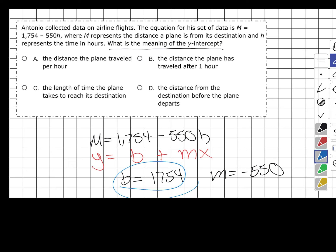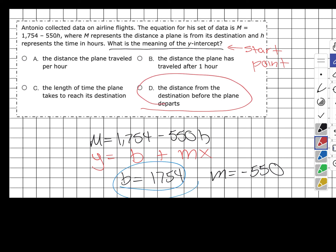Looking at the answer choices: A — the distance the plane traveled per hour; B — the distance the plane traveled in one hour; C — the length of time the plane takes to reach its destination; D — the distance from the destination before the plane departs. The Y-intercept is our starting point — our zero. Since it represents where everything begins, the best answer is D: the distance from the destination before the plane departs.